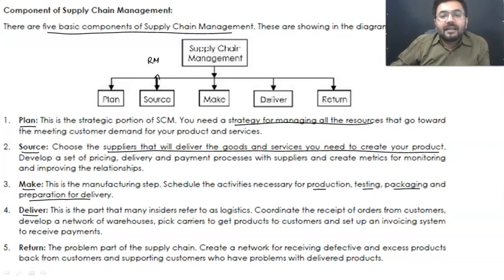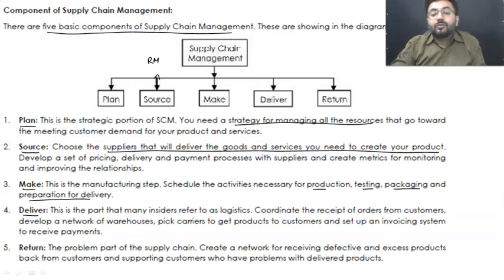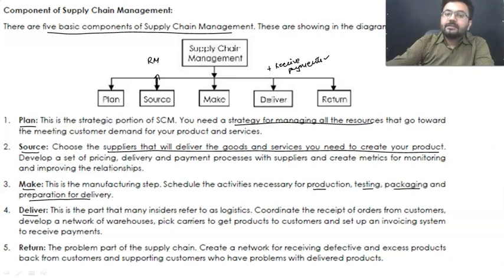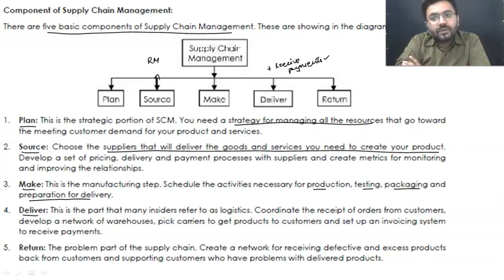The next is delivery — the logistics part. You need to have proper carriers, proper delivery agents, and a proper distribution channel so that the goods can be delivered to customers on time. Delivery also includes receiving payments. If the order is from Domino's, they will deliver the pizza at your doorstep and cross-verify whether the payment has been made in advance or not. If it is cash on delivery, they collect the payment first, then deliver the pizza.